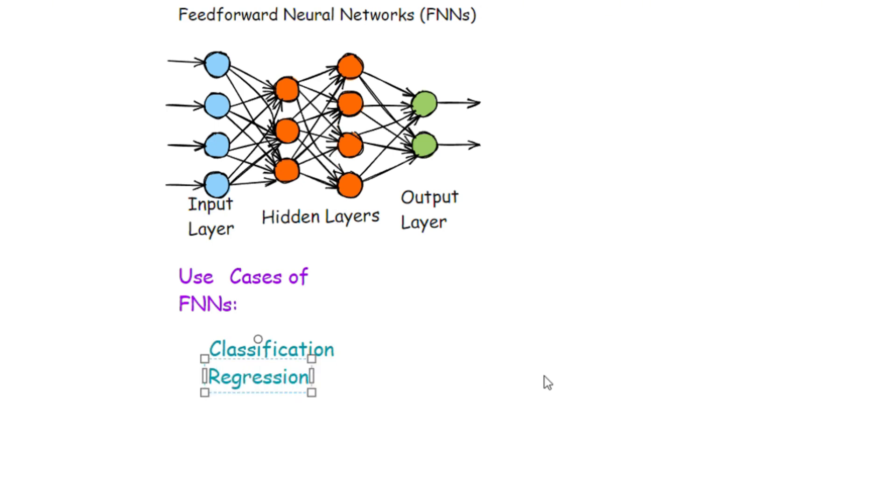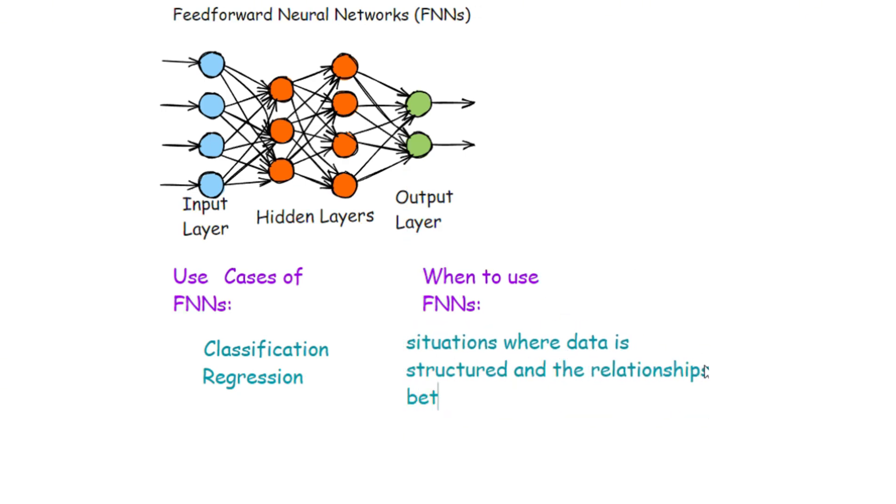Now when to use FNNs: FNNs are suitable for situations where the data is structured and the relationships between features are relatively straightforward. If you are new to machine learning and want to dive deeper over time, FNNs are a great starting point because they are essential to all other types of neural networks.